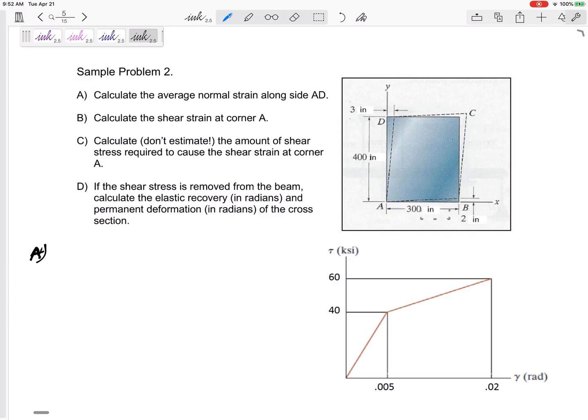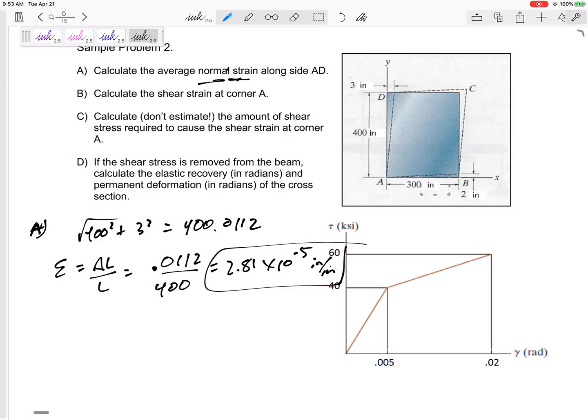But anyway, part A says to calculate the average normal strain alongside AD. So AD, let's look very closely right there. AD, its original length is 400 inches, its new length is, what is that new length? 400 squared plus 3 squared, take square root, its new length 400.0112. All right, so the normal strain, the Delta L over L, the Delta L is 0.0112 over the original L, 2.81 times 10 to the negative 5 inches per inch. So there's the normal strain of side AD. It's been a while since we've done this, haven't we? Normal strain is Delta L over L. We're looking at lengths and how lengths are stretching and or compressing.